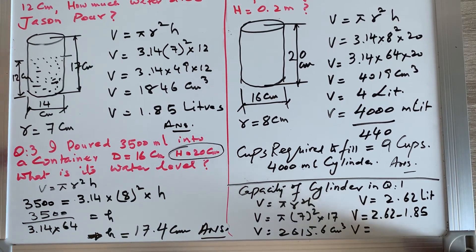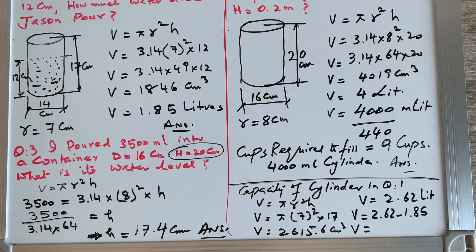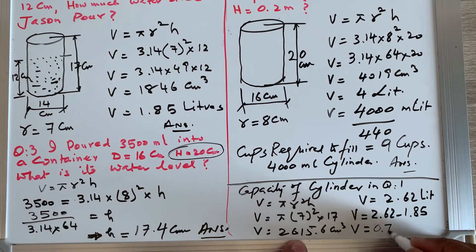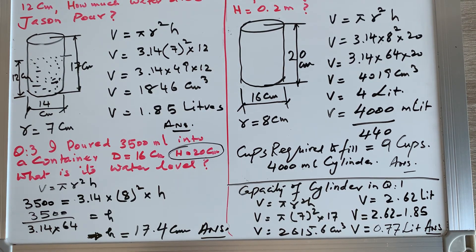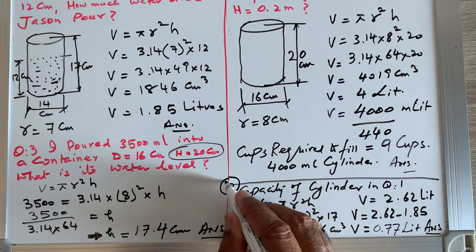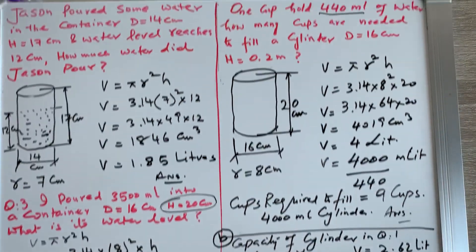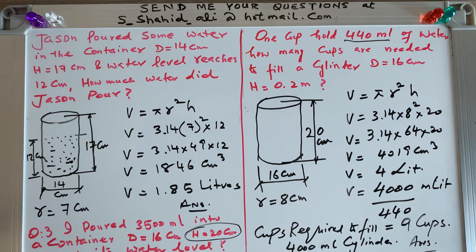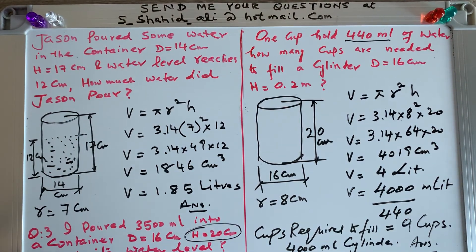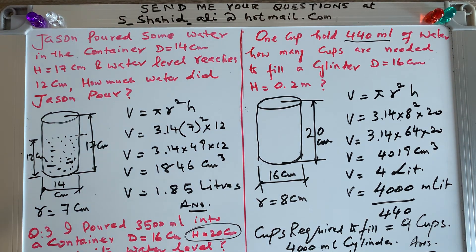Subtracting: 2.62 minus 1.85 equals 0.77 liters. So 0.77 liters more is required to fill the tank completely. There are many word problems based on the same formula — you need to read the question carefully, identify the data, and plug it in to get the required answer. Hope you liked the video. Subscribe to my channel and press the bell icon. Thank you for watching.